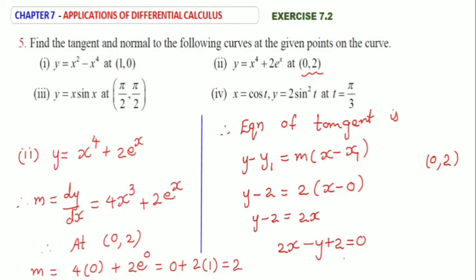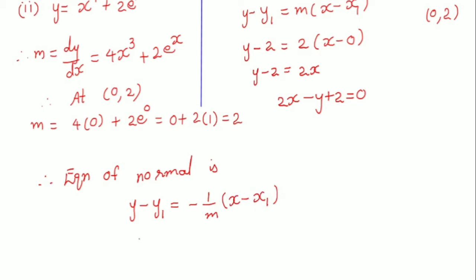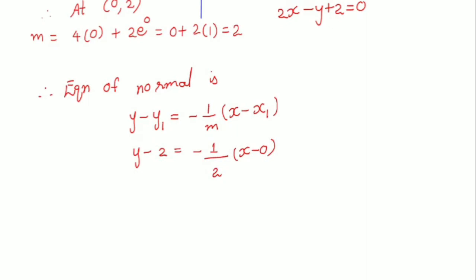Next, we have to find the equation of normal. Therefore, equation of normal is y minus y1 is equal to minus 1 by m into x minus x1. That is y minus 2 is equal to minus 1 by 2 into x minus 0. Cross multiplying, 2y minus 4 is equal to minus x. So this implies x plus 2y minus 4 equal to 0. This is the equation of normal.